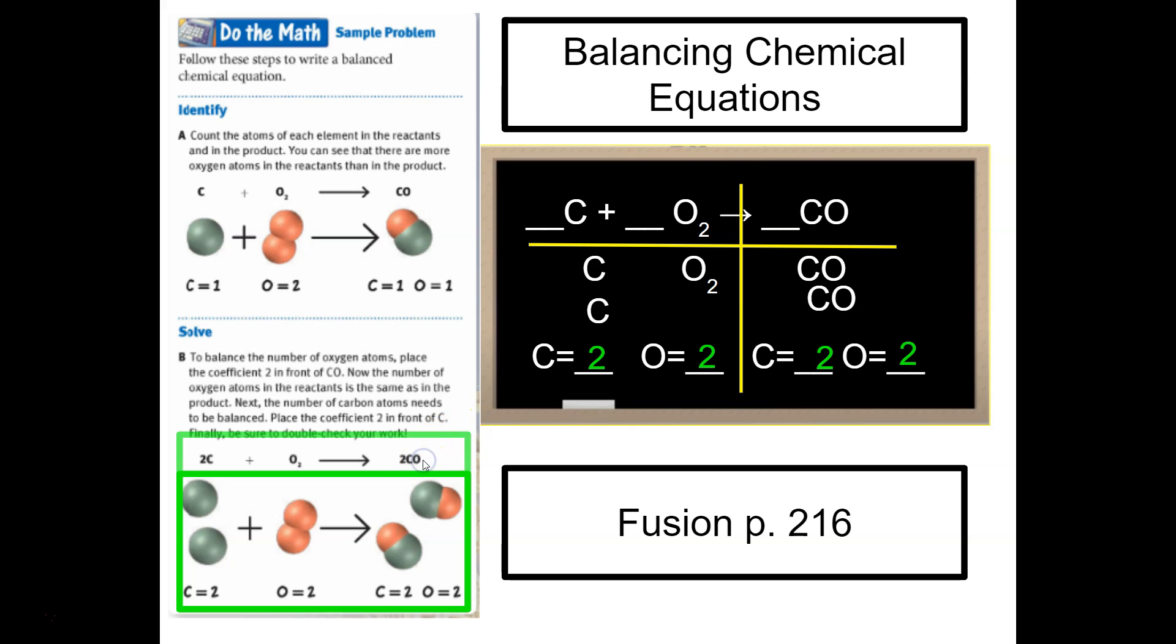The next part is to write down the coefficients in front of the molecules. How do we do that? Well, we're going to look in our workspace and see how many molecules we have. There are two carbon, so we'll put a two here. One oxygen molecule, so we get a one here. What coefficient will go here? There are two carbon monoxides, so two will go there.